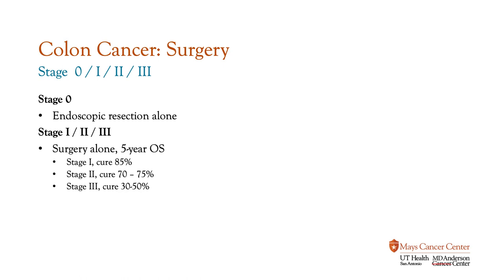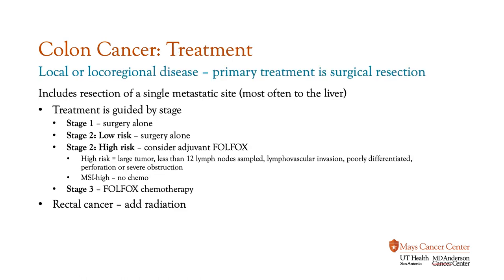For stage zero, meaning pre-cancer, we do resection with endoscopy alone. For stages one, two, and three, we typically start with surgery to remove the tumor and surrounding lymph nodes. Surgery alone is a very important treatment — cure rates are very high, especially at lower stages. The cure rate is about 85% with surgery alone for stage one, about 70 to 75% for stage two, and about 30 to 35% for stage three.